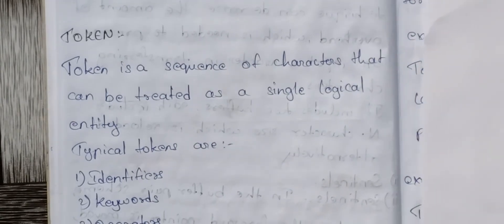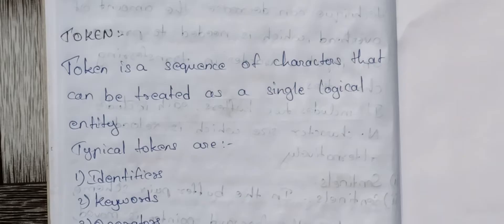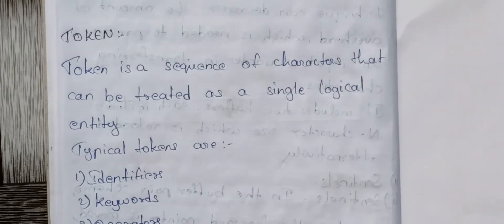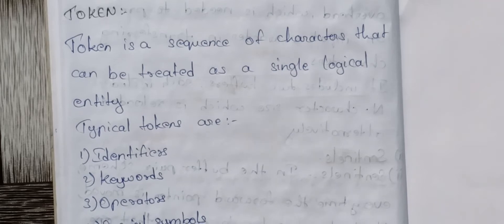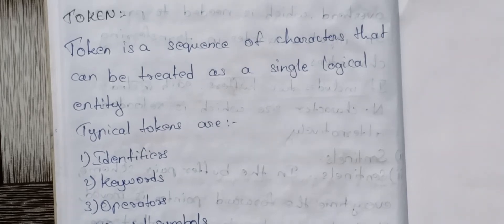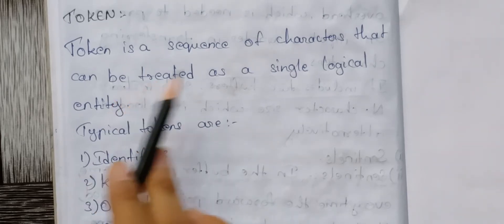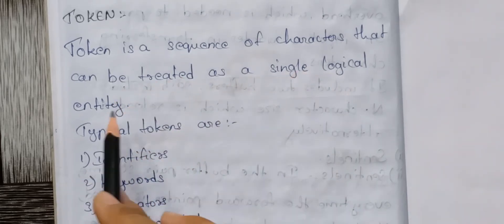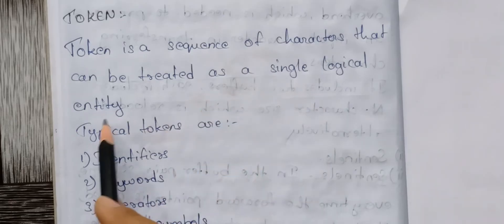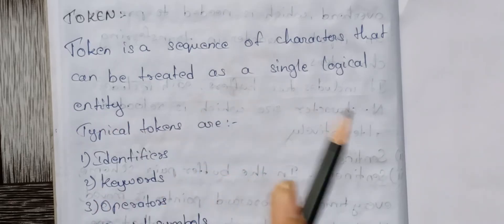So, we are going to do theory first, and I will explain with examples. First, tokens. A token is a sequence of characters that can be treated as a single logical entity.